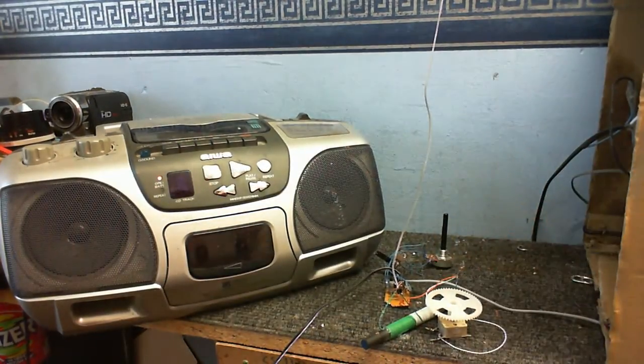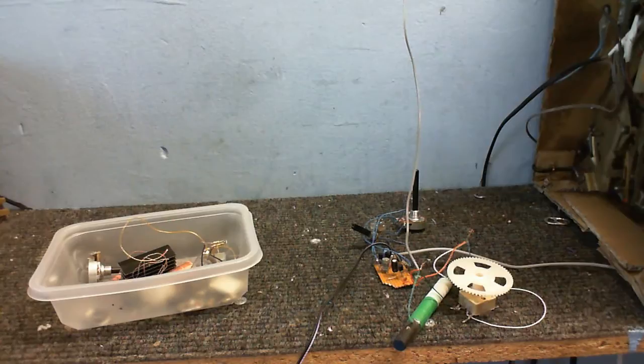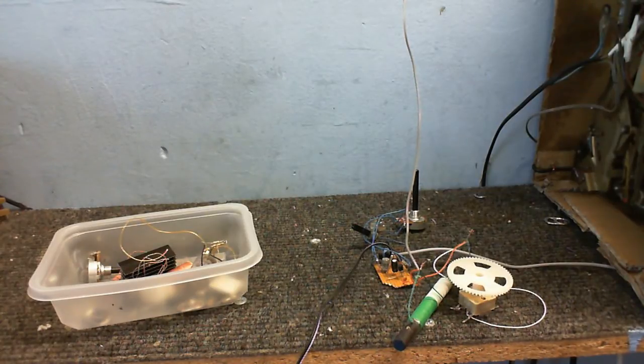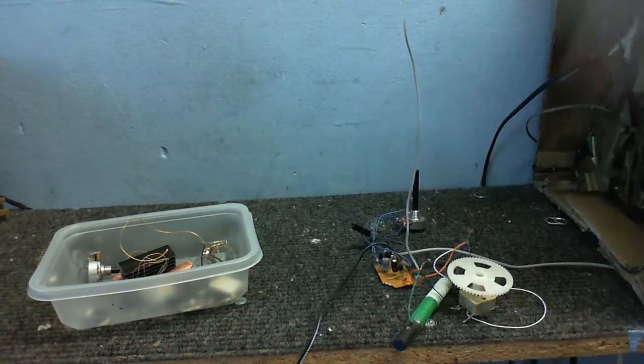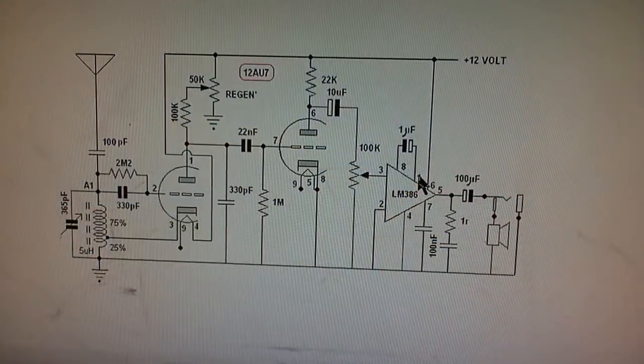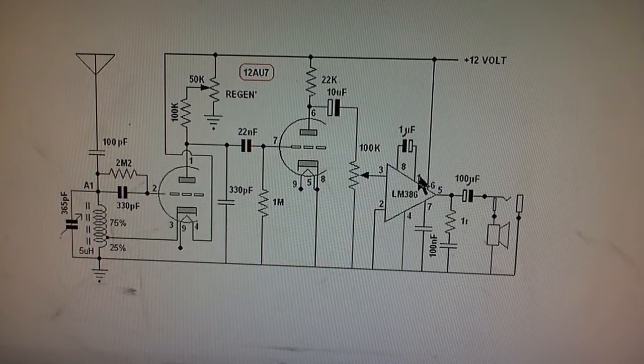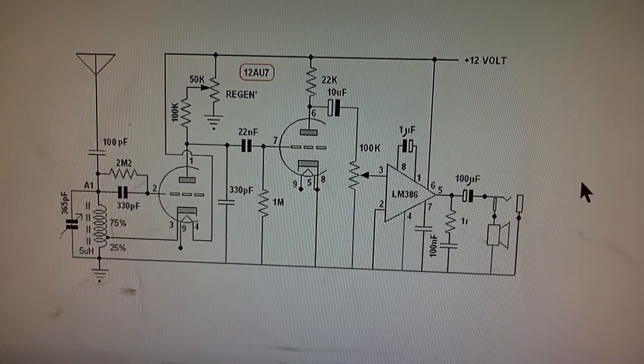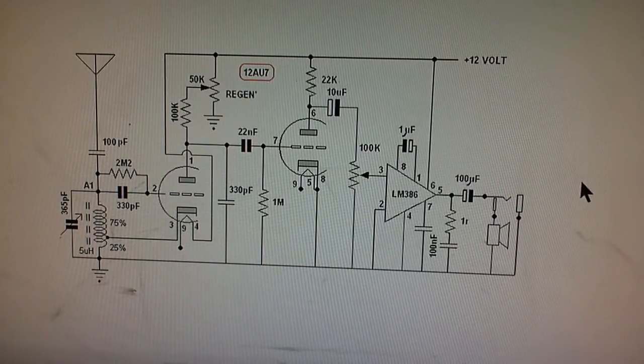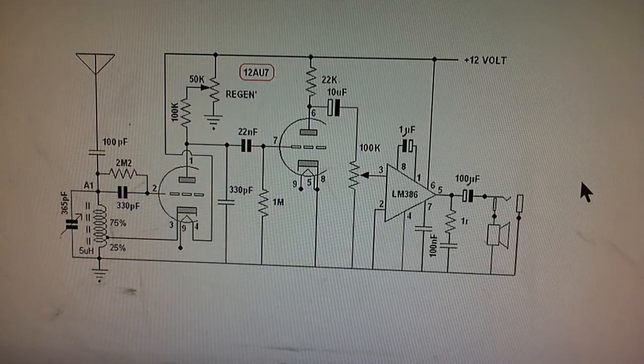Well I think that's about the best it's gonna work. Anyway that's only part one of this video because what I want to try and do now is make another one of these but instead of using these we're gonna use one of these and this is the circuit I'm going to build. Pay attention to all of this over here with the LM386. I'm not gonna build that part because I've got much better amplifiers I can use.